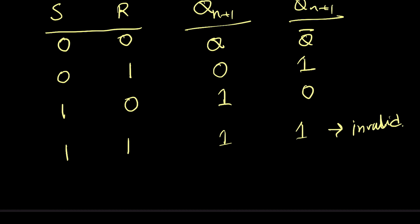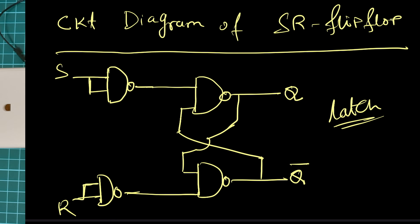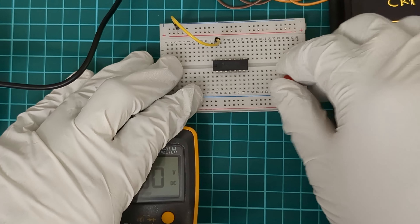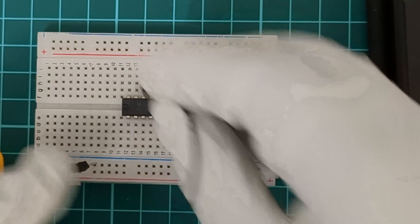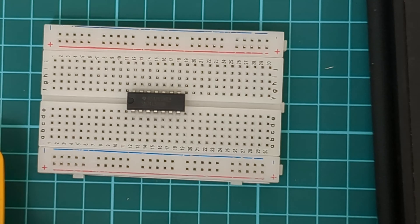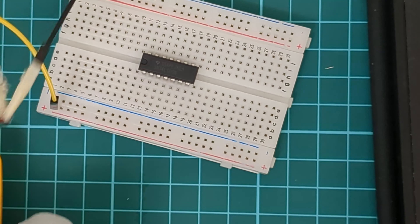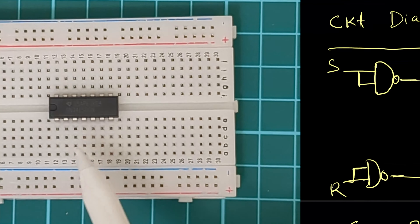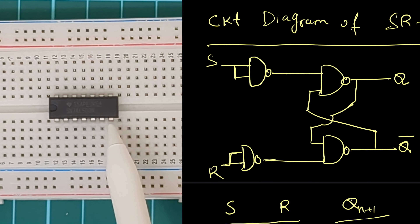Today we will use this IC to make our SR latch. First let's remove all the cables from the breadboard and connect the power source. This one is a 7400 IC. We need to check the U-notch — on the bottom this will be pin 1, pin 7, pin 8, and pin 14. So we need to make this circuit.